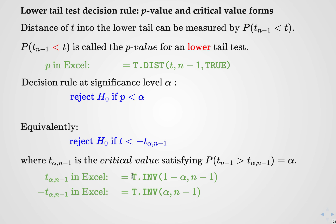There are two ways to get the critical value in Excel. You can get it directly from the t-distribution command as before, or you can get it directly with the minus sign included by using the inverse of the t-distribution and putting alpha in. So if you want to test at the 5% level, you put in 0.05 — whereas the other method would use 0.95. Either way you end up with the same hypothesis test.